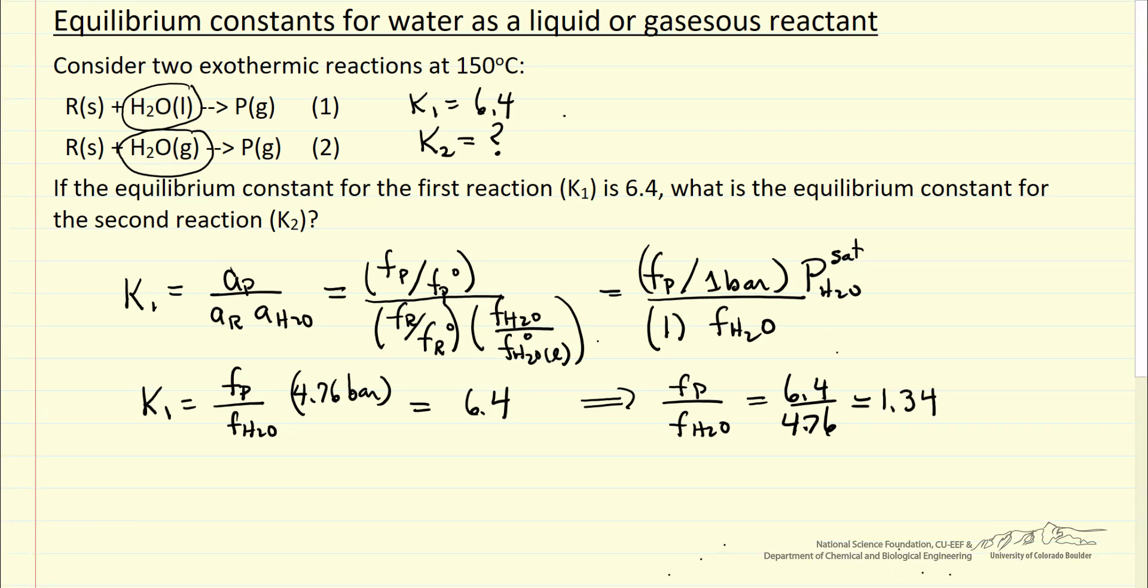Now for the second reaction, you can write the equilibrium constant again in terms of ratio of fugacities. Fugacity of P and the reactant solid are the same, fugacity of water the same. The only difference is our reference state condition we use to calculate delta G is now a gas, ideal gas at one bar, pure gas, so it's fugacity of one bar.